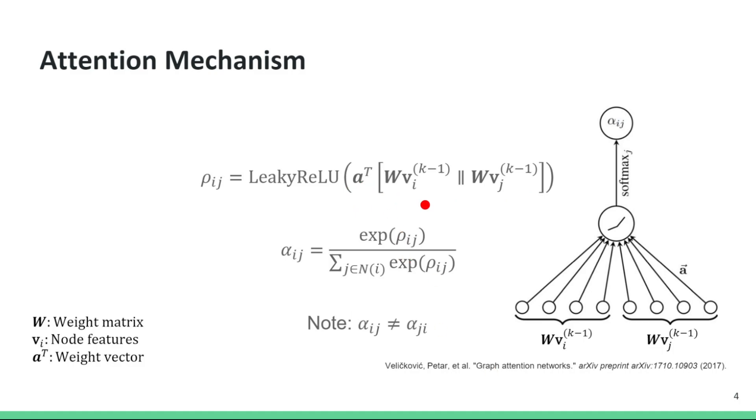We then pass on this value to a LeakyReLU function. We end up with a single scalar for each pair of connected nodes in a graph. Finally, we ensure that these weights sum up to one for each node i by applying a softmax function.